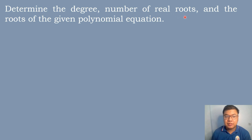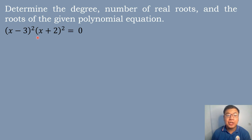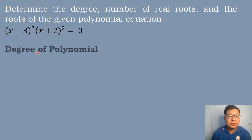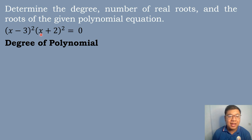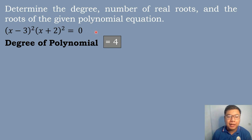Let's solve our second example. Determine the degree of polynomial, number of real roots, and the roots of: (x − 3)²(x + 2)² = 0. The first step is to identify the degree of polynomial. Since each factor has an exponent of 2, we get x squared times x squared equals x to the fourth power. So the degree of polynomial is equal to 4.